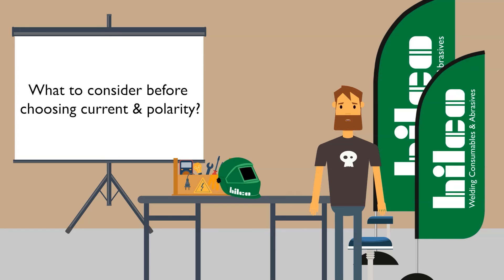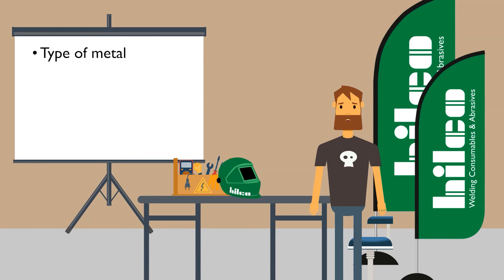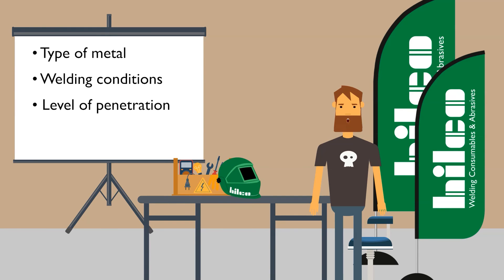As you might understand, it's really important to know about welding current and polarity — it's essential to complete a welding project successfully. Before choosing AC or DC currents in electrode-positive or electrode-negative polarity, you have to consider the type of metal, welding conditions, level of penetration, and deposition rates. Knowing this will make your welding job a lot easier.